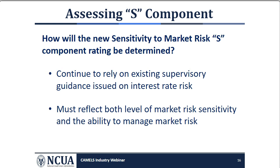In assessing the level of market risk exposure and the risk management process in place to control it, examiners will rely on the existing interest rate risk regulation in Part 741 of NCUA rules and regulations, as well as Appendix A to Part 741, and supervisory guidance including guidance issued on interest rate risk, investments, and asset liability management.